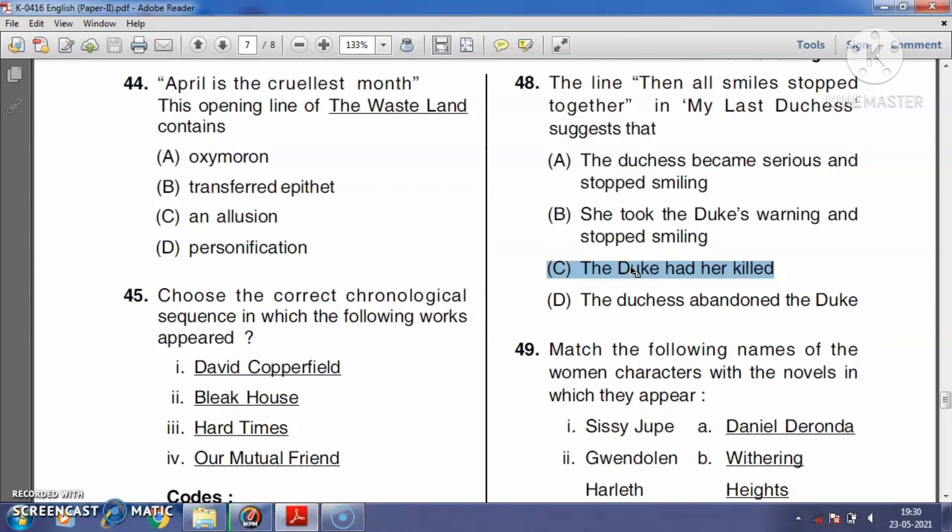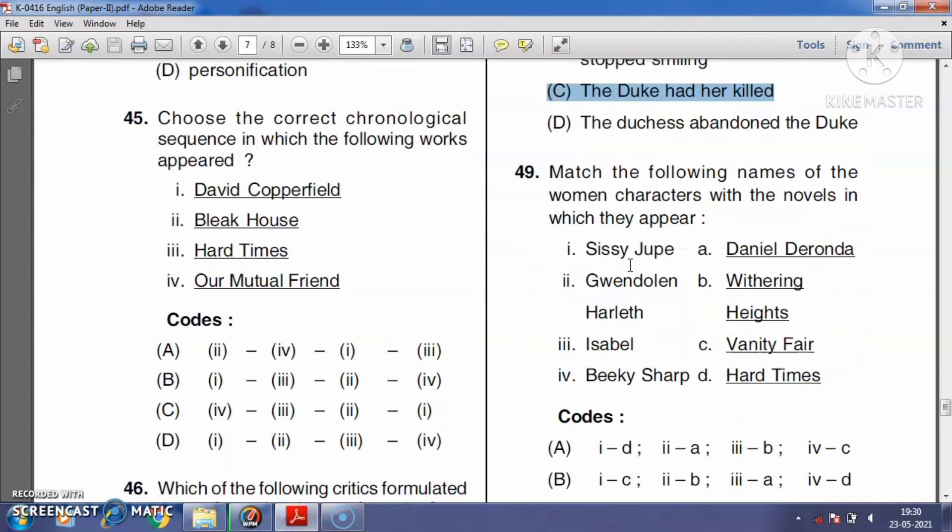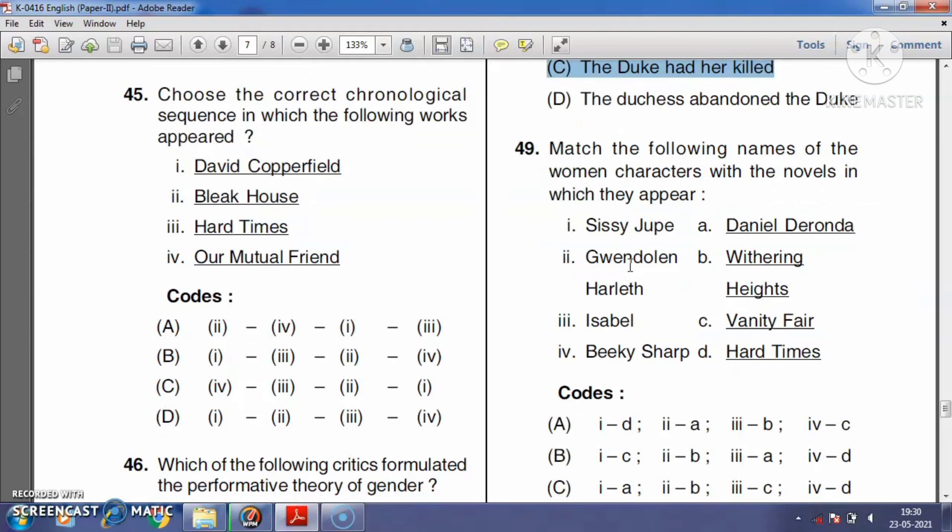Question number forty-nine: Match the following names of women characters in the novels in which they appear. Cissy Jupe is a fictional character in Dickens's novel Hard Times. Gwendolyn Harleth is a character in George Eliot's novel Daniel Deronda. Isabella is a character in Emily Brontë's novel Wuthering Heights. Becky Sharp is a character in Thackeray's novel Vanity Fair. The right answer is option B.